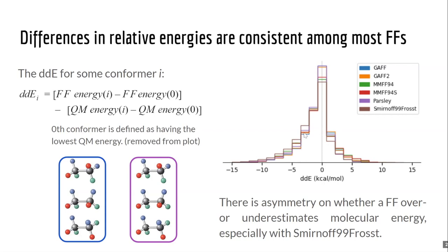We see that generally GAFF and GAFF2 are the highest around zero, followed by Parsley — which is somewhat hidden among the blue — and then MMFF94 and MMFF94S, and then SMIRNOFF. You can see that Parsley truly does improve upon SMIRNOFF. Something pretty obvious in this graph is an asymmetry in terms of force field overestimates versus underestimates of conformer energy, especially with SMIRNOFF99Frosst, which has the highest difference between the left and right sides.